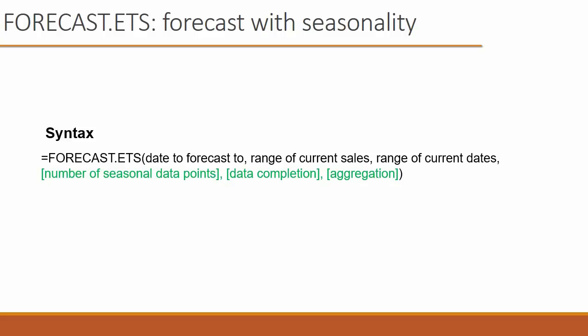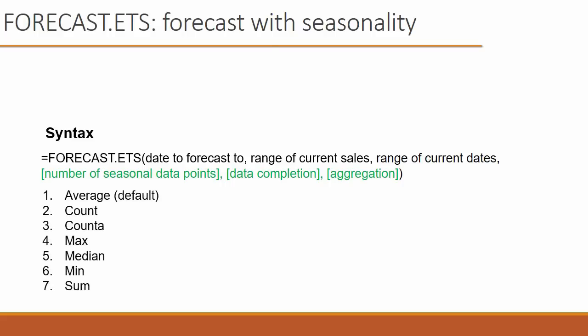The third optional argument is aggregation — what if you have multiple values for the same period, like two numbers for August and two for September? The default (number one) is to average them together. You also have six other functions that Excel can use to combine those duplicate values.